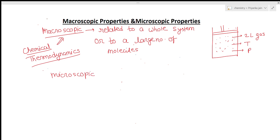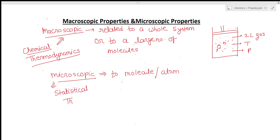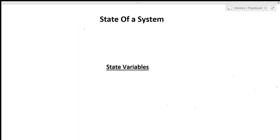Microscopic properties are properties connected to the molecular level — to a particular molecule or atom. Their pressure, volume, etc., are called microscopic properties, and these we study in statistical thermodynamics. If you want to study microscopic properties, you'll need statistical thermodynamics. You can watch those lectures on my channel, Priyanka Jain, where I have a complete playlist on statistical thermodynamics.